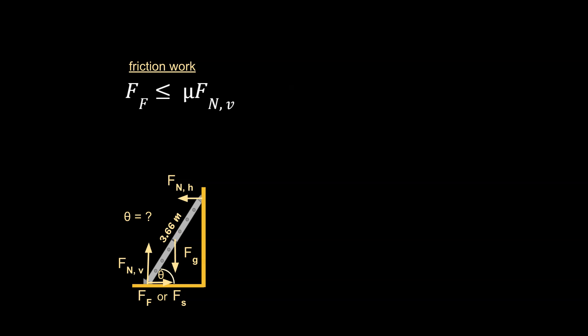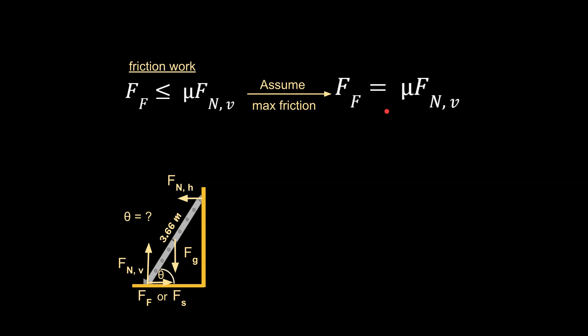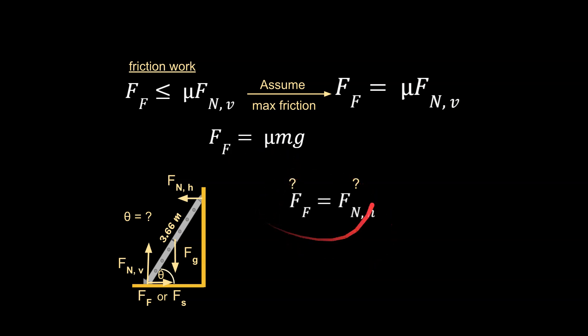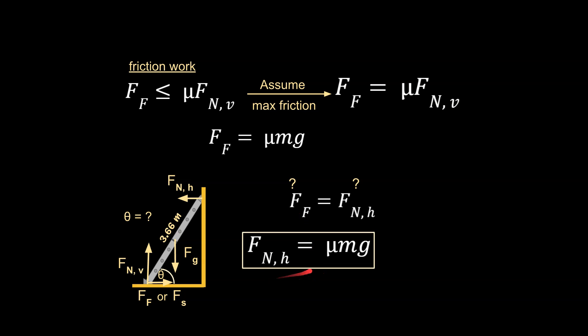Next we have our friction equation. Friction can act on two different axes — typically x and y — and that's the case here. This equation normally has a less-than-or-equal-to symbol, but because the problem asks for the minimum angle before the ladder starts to slip, we assume maximum friction and change it to an equal sign. We know fn,vertical equals mg, so the force due to friction is just μmg. From our sum of forces in x, we've now proven that fn,h equals μmg.